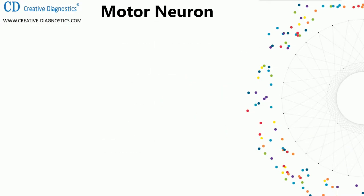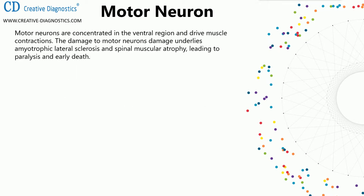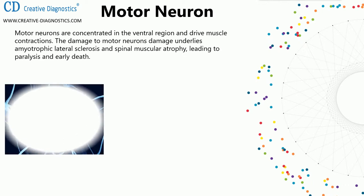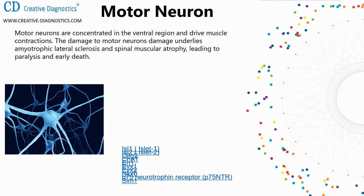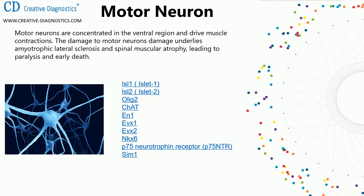Second: motor neurons. Motor neurons are concentrated in the ventral region and drive muscle contractions. Damage to motor neurons underlies amyotrophic lateral sclerosis and spinal muscular atrophy, leading to paralysis and early death. Motor neuron markers include ISL-1, ISL-2, Olig2, ChAT, HB9, EVX-1, EVX-2, NKX6, P75 neurotrophin receptor, and SIM1.